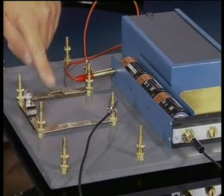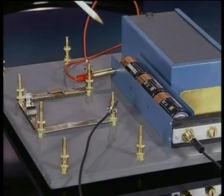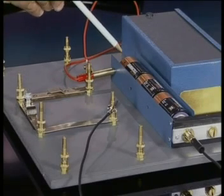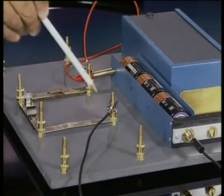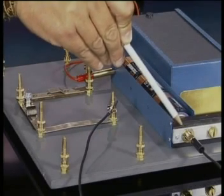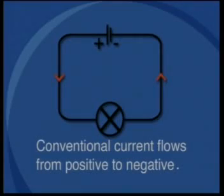Conventional current is the flow of positive electric charge from the positive terminal of the battery all the way around the circuit to the negative terminal of the battery. We also use conventional direction when marking currents on circuit diagrams. Conventional current flows from positive to negative.